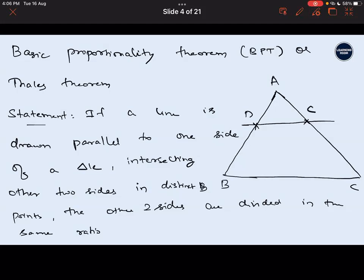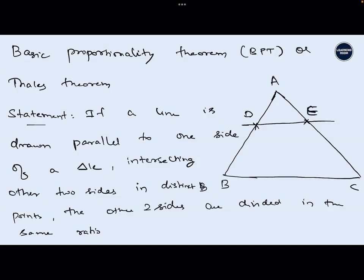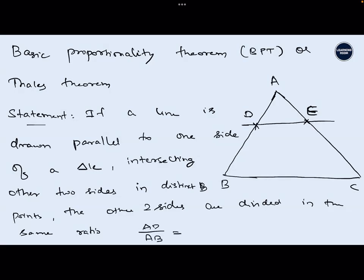With points A, B, C, D, E - where D is on AB and E is on AC - if DE is parallel to BC, then AD/AB = AE/AC. Keeping the area proof aside, using similarity logic, can you tell me how to prove that? Using basic logic, tell me how you can prove this in two steps.